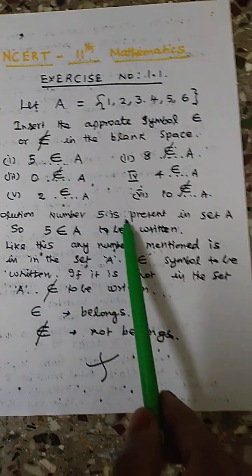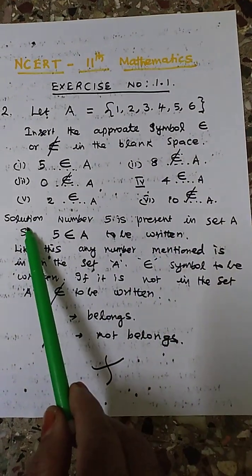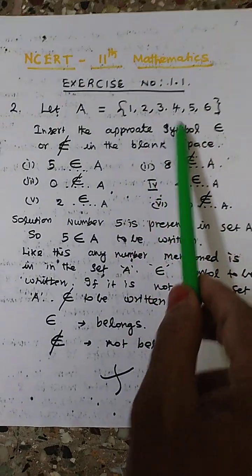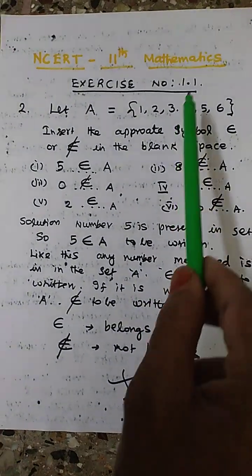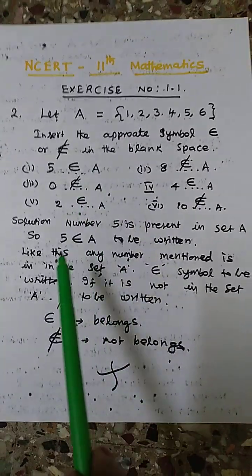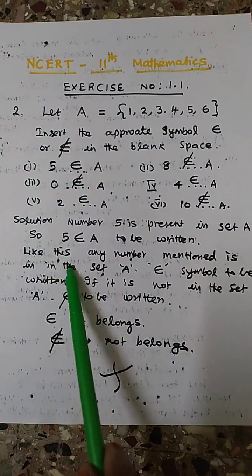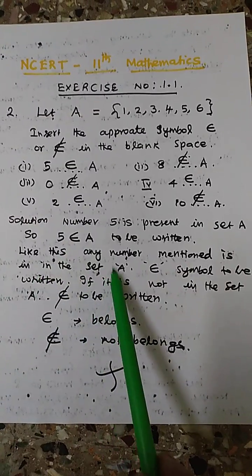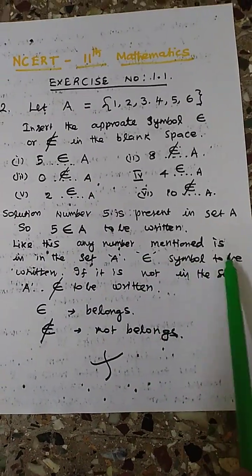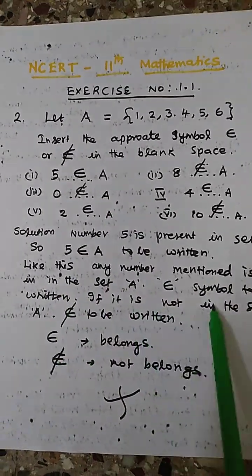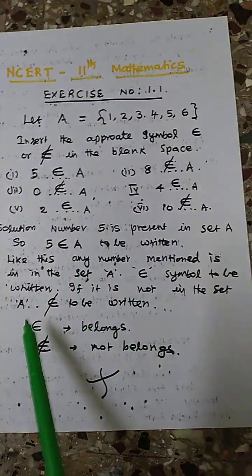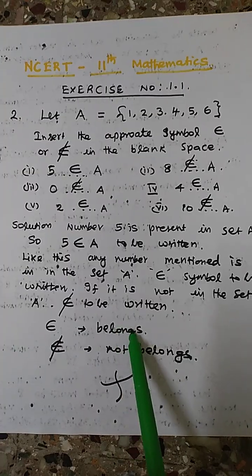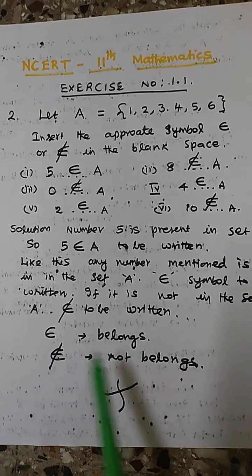Solution: 5 is present in the set A, so 5 belongs to A — that is to be written. Like this, any number mentioned that is in the set A, the belongs symbol is to be written. If it is not available in the set A, not belongs is to be written. Belongs means this symbol (∈), not belongs means this symbol (∉).